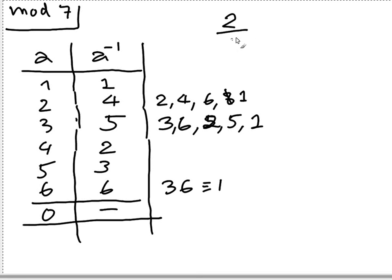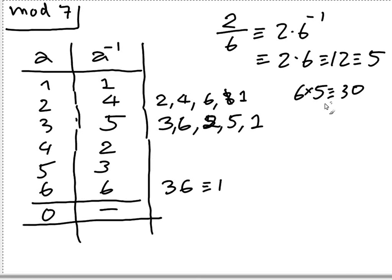For example, if we want to find 2 over 6, that's equal to 2 times the multiplicative inverse of 6, that's 2 times 6, that's 12, and that's 5. You can check that 6 times 5 is 30 and that's 2 mod 7.